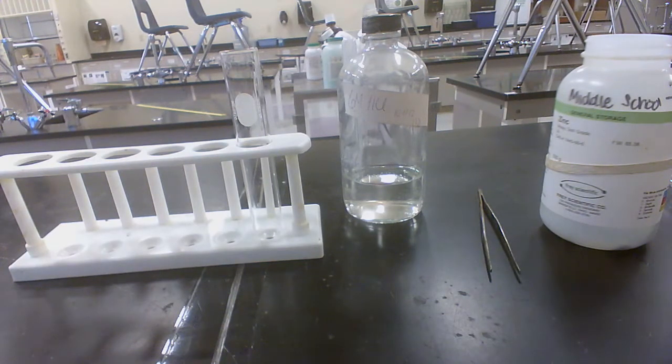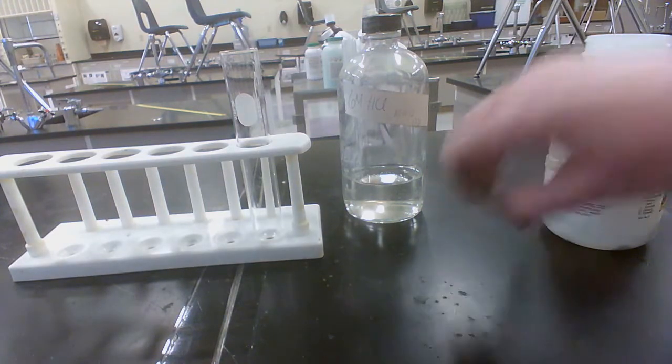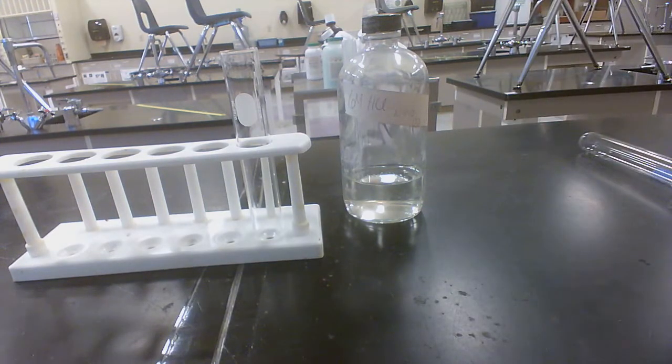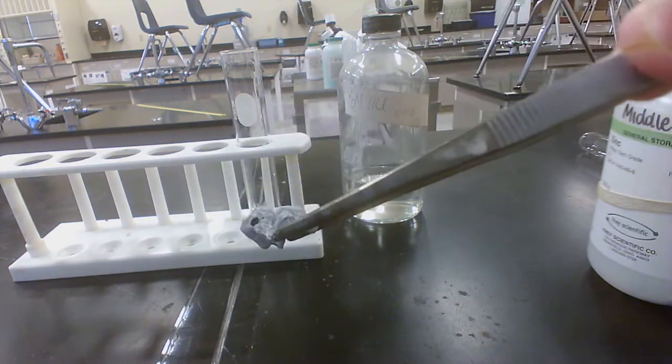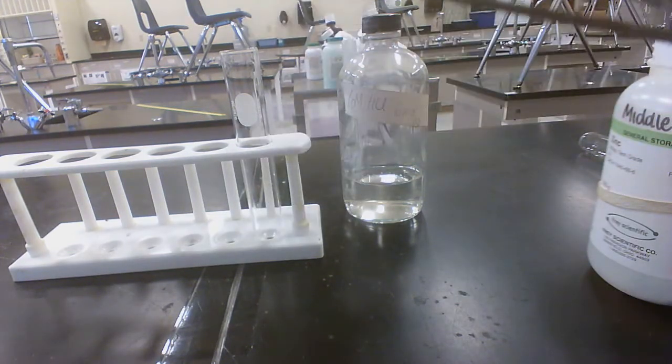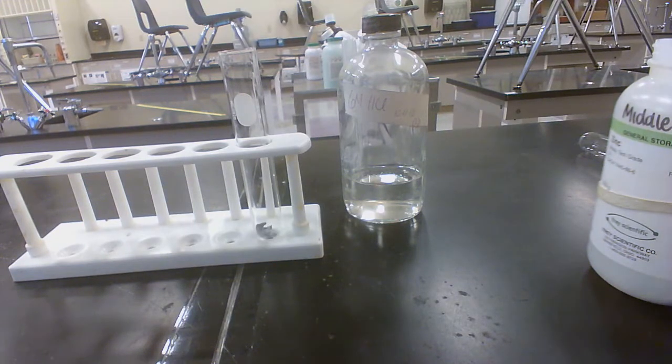Okay, let's react a piece of zinc with some aqueous hydrogen chloride, otherwise known as hydrochloric acid. Here I have a piece of zinc. As you can see, it is a solid. You can hear it clink when I drop it into the test tube.